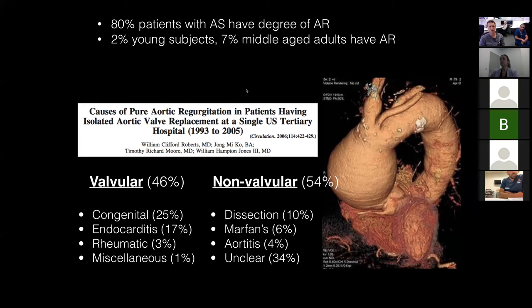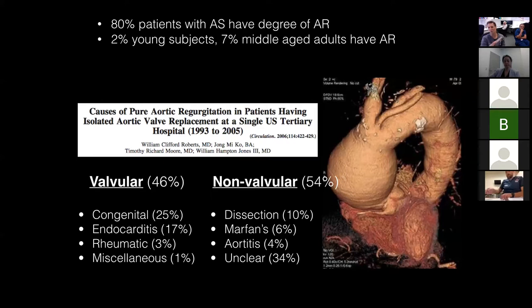About 2% of young subjects have some form of aortic regurgitation, and 7% of middle-aged subjects also have some form. In terms of etiology, the majority are non-valvular, but the valvular ones are those seen most frequently — congenital, endocarditis, rheumatic, and miscellaneous. From studies of patients having aortic valve replacements, the big ones include degenerative changes and aortic stenosis-type disease.